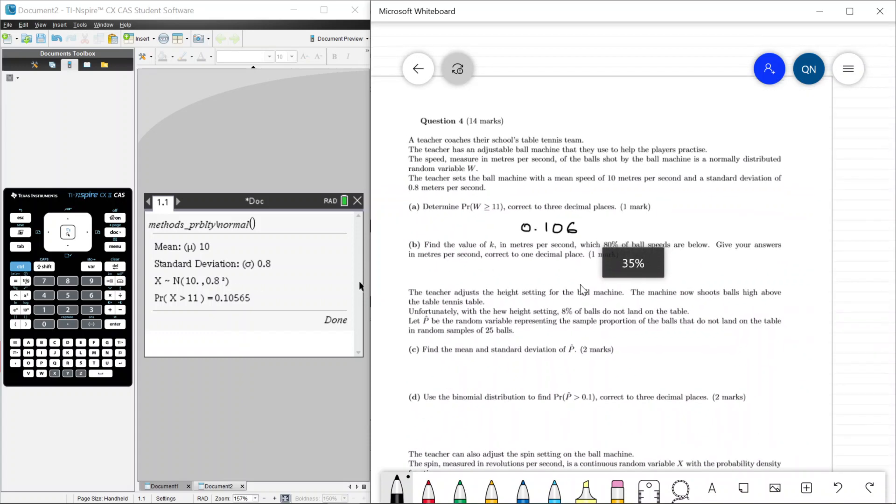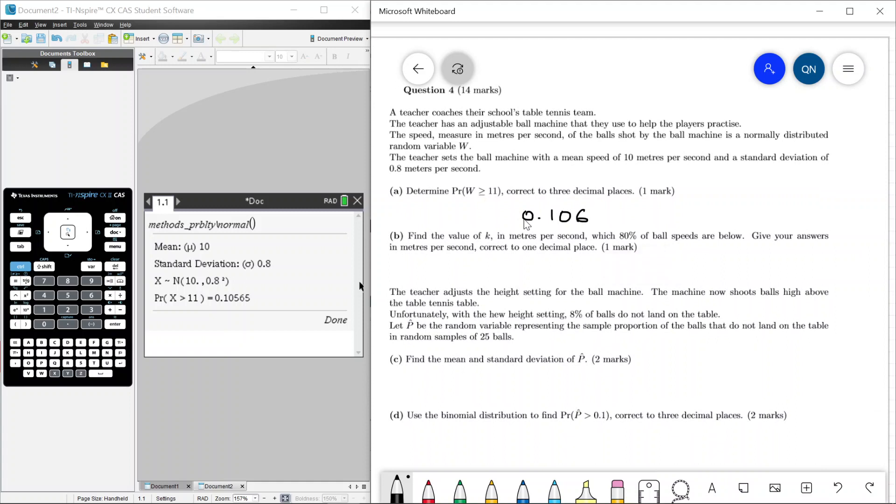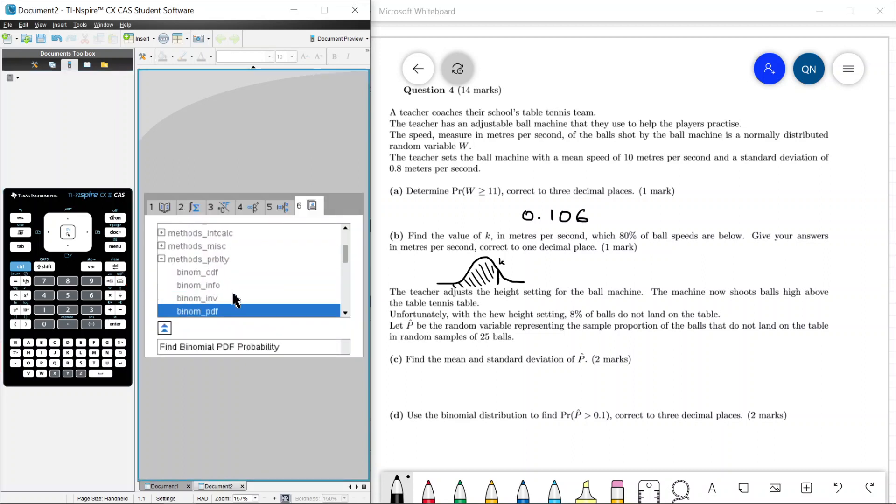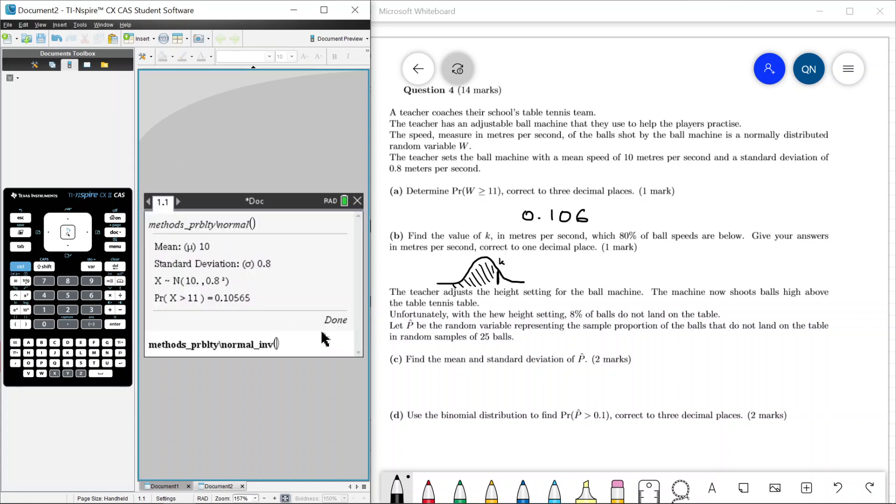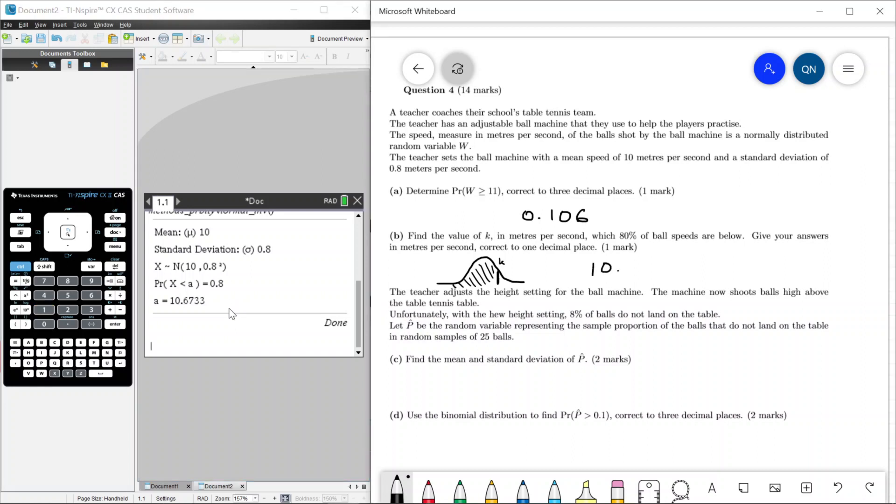Find the value of k which 80% of the ball's speeds are under. If you take a look at the normal distribution, we want to find the value of k such that below this value of k is 80% of the distribution. This is exactly inverse normal. Let's go to methods, probability, and normal inverse. Given probability is 0.8, and we want that probability to be below certain values. So that's option 1. The mean is 10, and a is 10.67 to one decimal place. So this is 10.7.